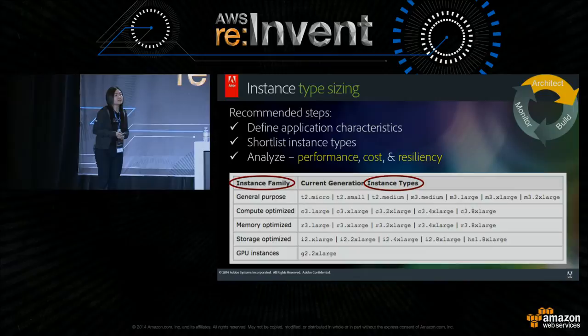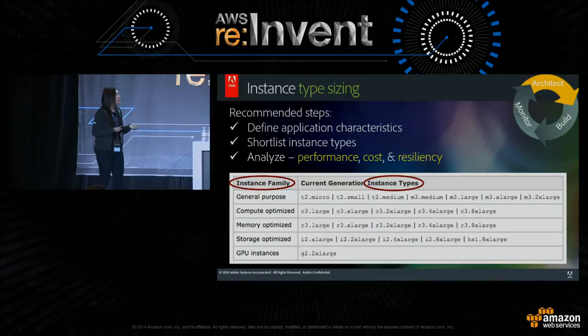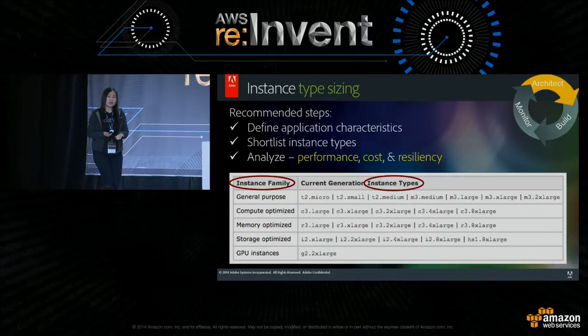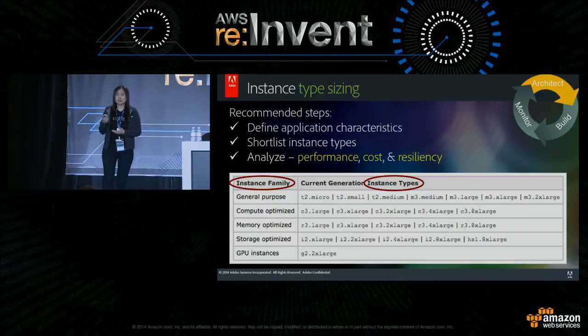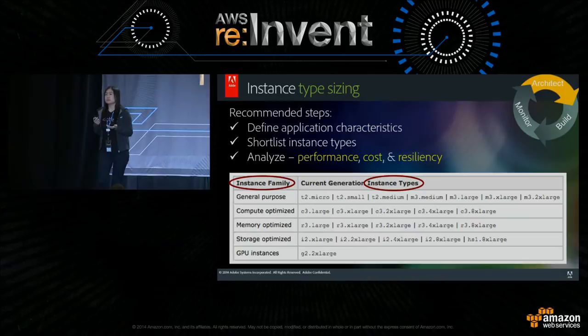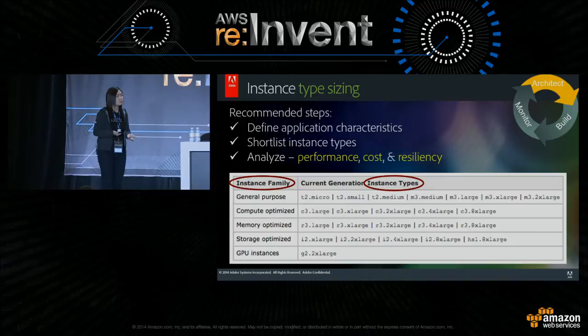The first thing I want to talk about is instance type sizing. To get the most out of EC2, it's so important to pick the most optimal instance type. We look at our application characteristics and usage profile — is the function CPU-driven or memory-bound? Then we pick from the pool of instances available in AWS and do further benchmarking to evaluate from a cost, performance, and resiliency perspective what is the most optimal instance type. There are five major families AWS offers, from general purpose to CPU-optimized to GPU instances, with sizes ranging from micro to 8xlarge.